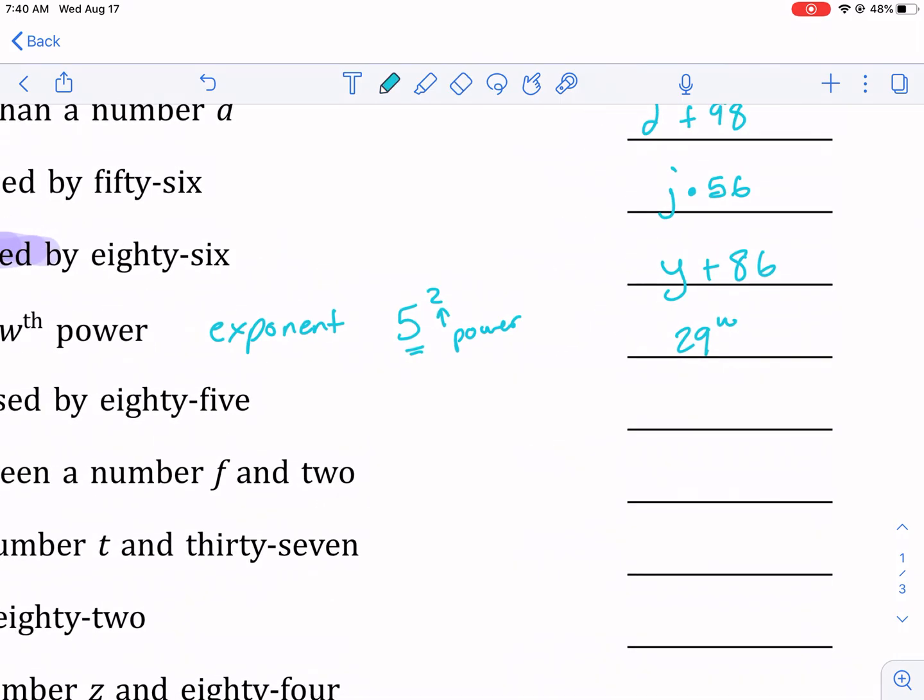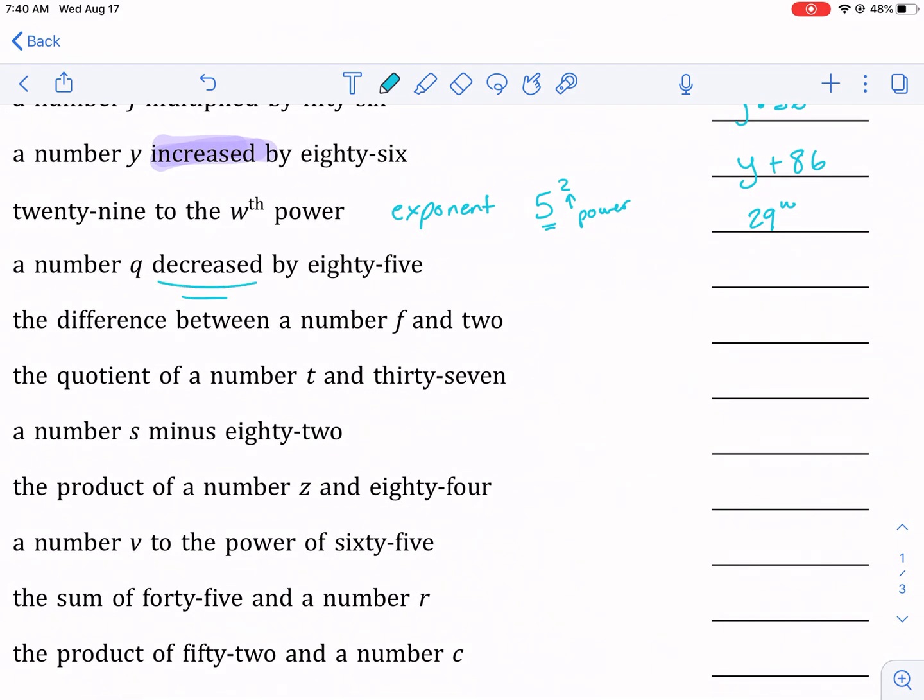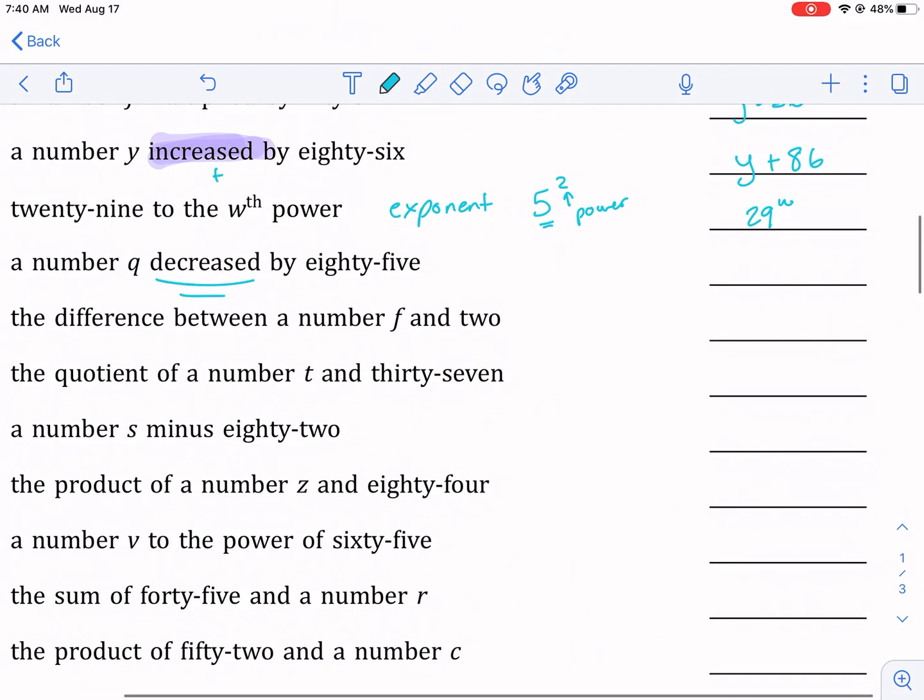A number q decreased—okay, now we're talking about decreased. Increase is addition. Decrease, then by that same reasoning, is subtraction. So q decreased by 85—this time you have to be careful. Can't be 85 minus q, that's not the same thing. Has to be q minus 85.